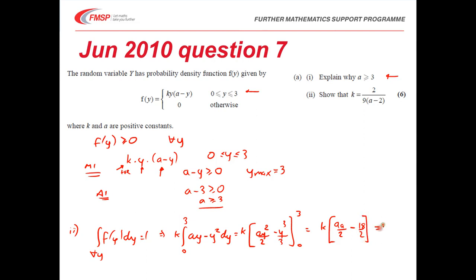That must equal 1. Going up to the top here, that tells me that k times by 9 lots of a minus 2 must equal 2, so k equals 2 over 9a minus 2 as required. For the marks, you get method 1 for doing an integration and accuracy 1 for doing it correctly. You get a method mark for setting the integral to equal 1, and then an A mark for getting the correct expression at the end.